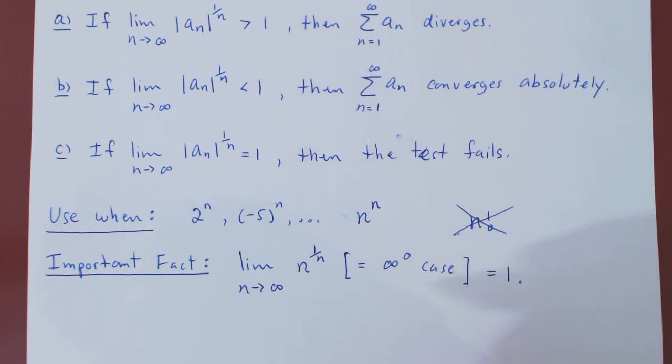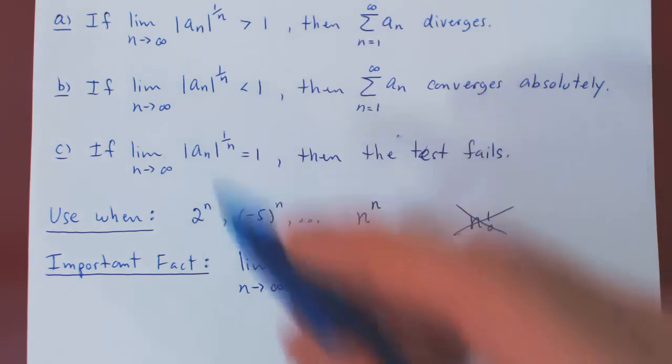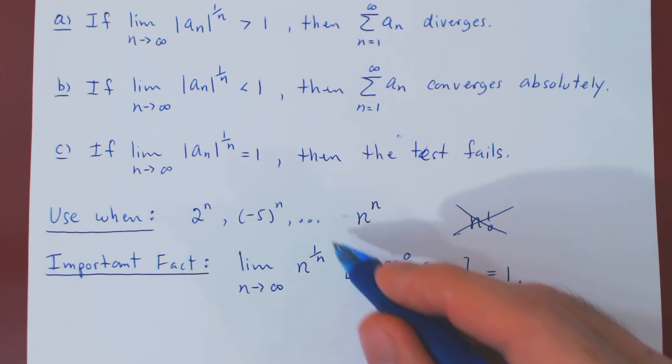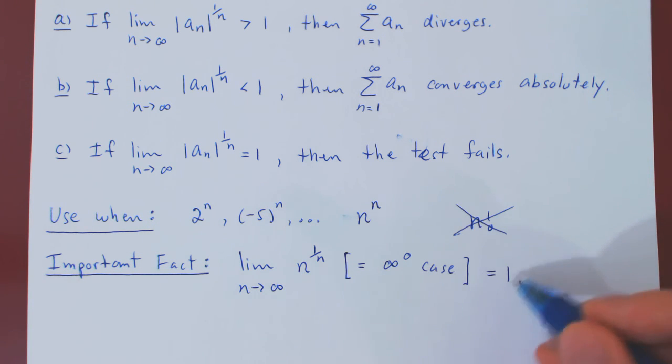So if you ever use the root test from now on, and within the given limit, you have the nth root of n as n tends to infinity, you can simply quote that the result is 1. You won't have to re-derive this limit every time it crops up in the root test.